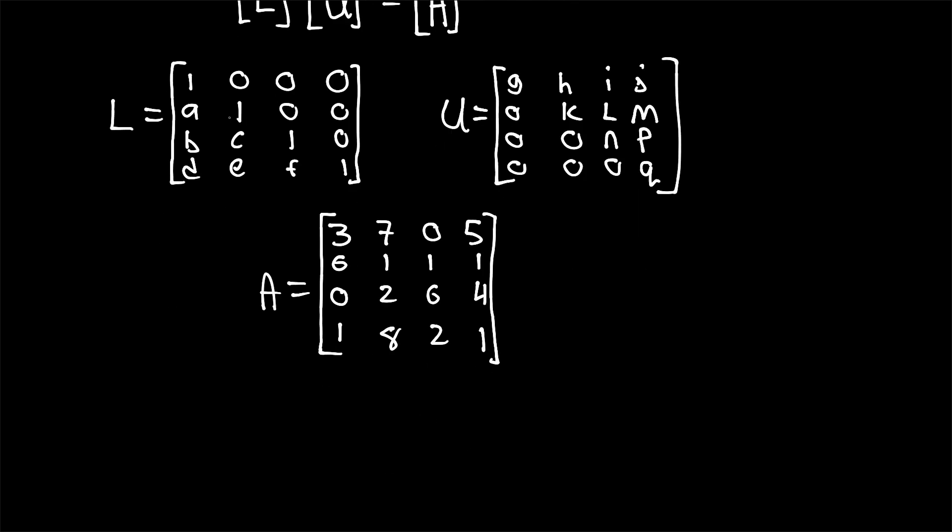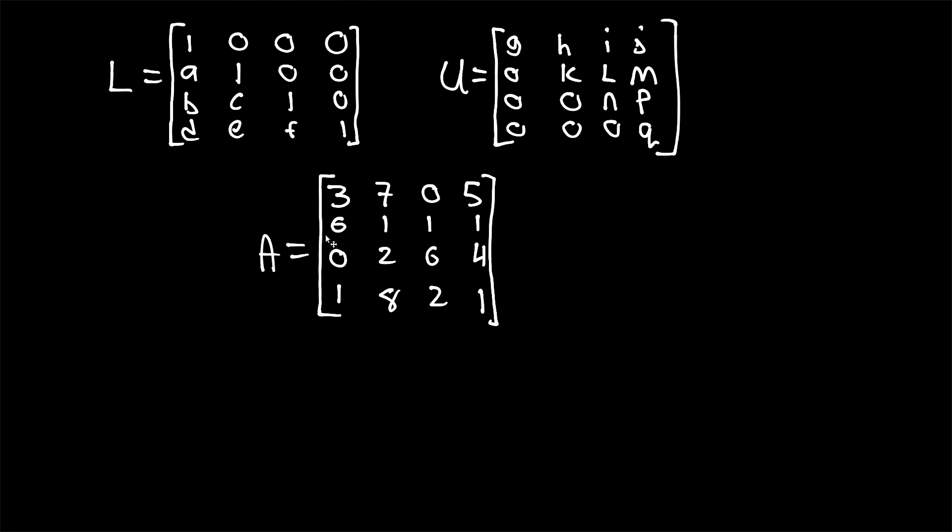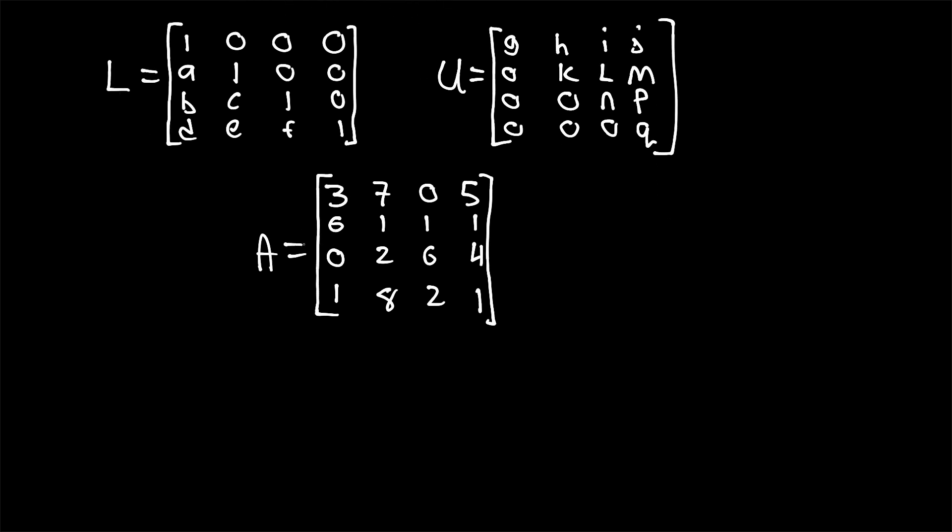Let's arrange these matrices into the form that we expect to see, LU equals A, and we'll commence solving the unknowns, the unknown letters that we have throughout matrices L and U.